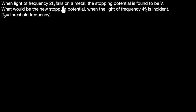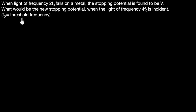When light of frequency 2F₀ falls on a metal, the stopping potential is found to be V. What would be the new stopping potential when light of frequency 4F₀ is incident, given that F₀ is the threshold frequency? Since we're dealing with photoelectric effect, the first thing I like to do is write down the photoelectric equation, because any photoelectric effect numerical can be solved from the photoelectric equation.